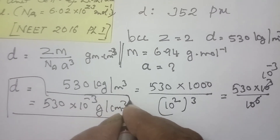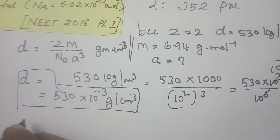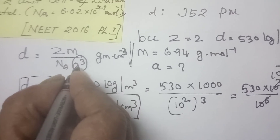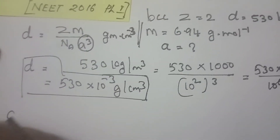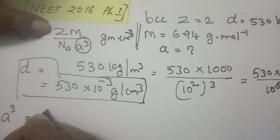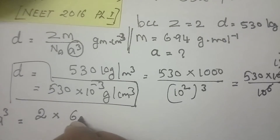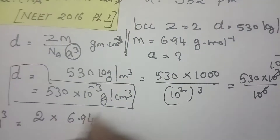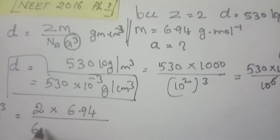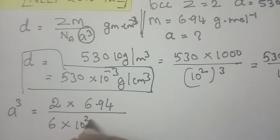Now let us solve for A. We are asking for A³. So A³ equals ZM divided by Nₐ·density. Z is equal to 2, molar mass is 6.94 gram — no unit change needed. Avogadro's number: we take 6×10²³.